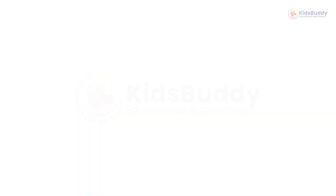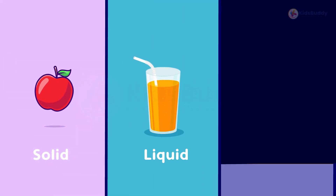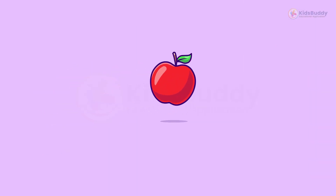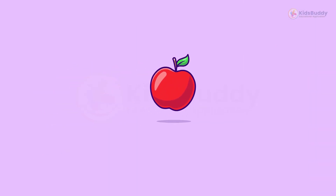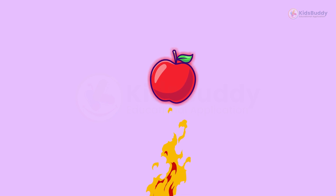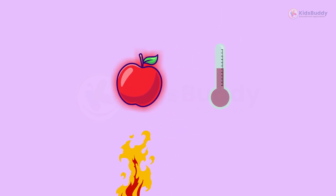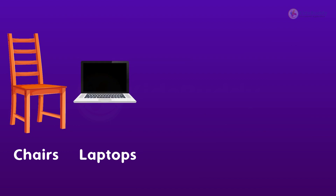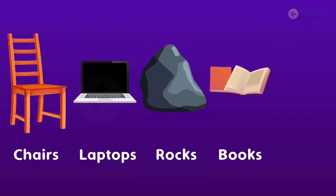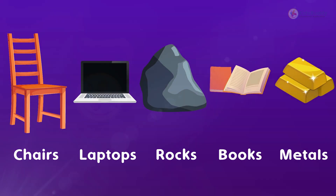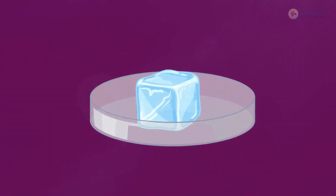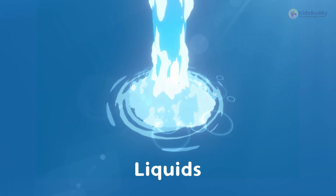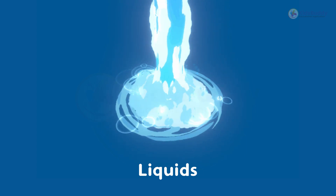The three states of matter are solid, liquid, and gas. One important state of matter is solid. In a solid state, objects keep their own shape and do not flow at a given temperature. Examples of solids are chairs, laptops, rocks, books, most metals, etc. Ice is also a solid, but when it melts it becomes liquid.